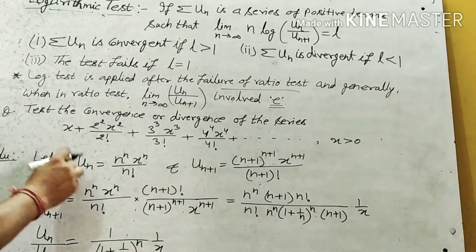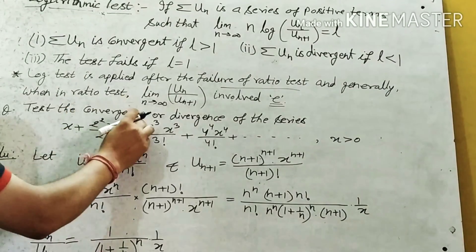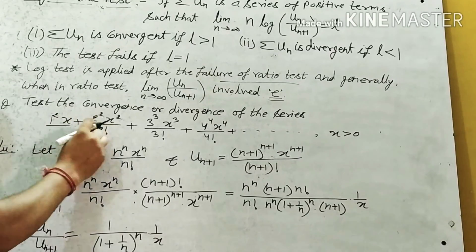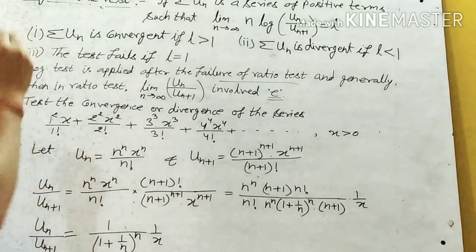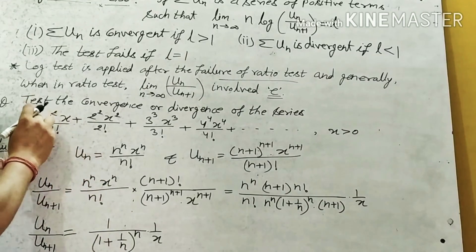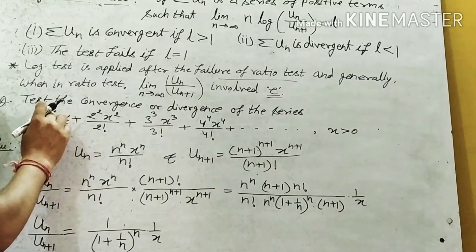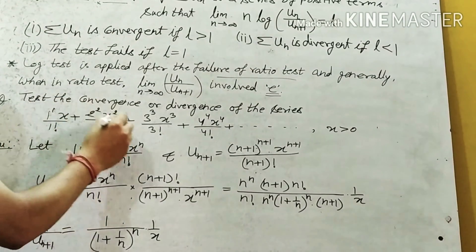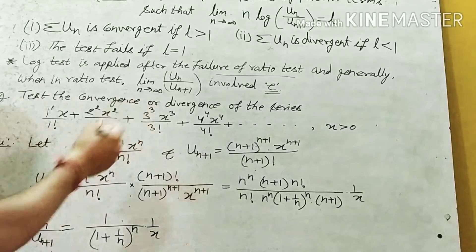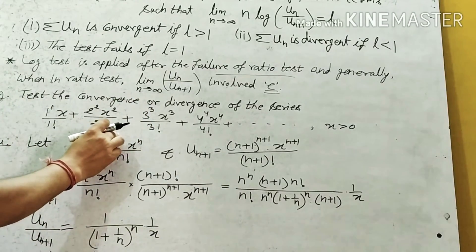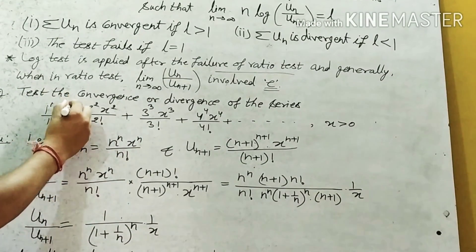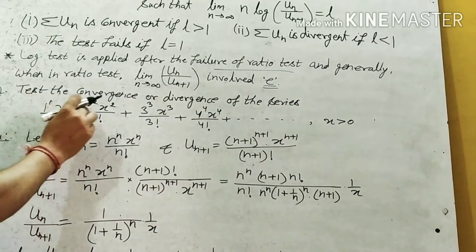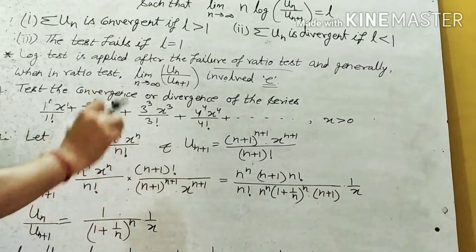Let un equal to the general term. Looking at the pattern — 1², 2², 3², 4² — the numerator is n raised to the power n, and x raised to the power n, divided by n factorial. So un = n^n · x^n / n!.